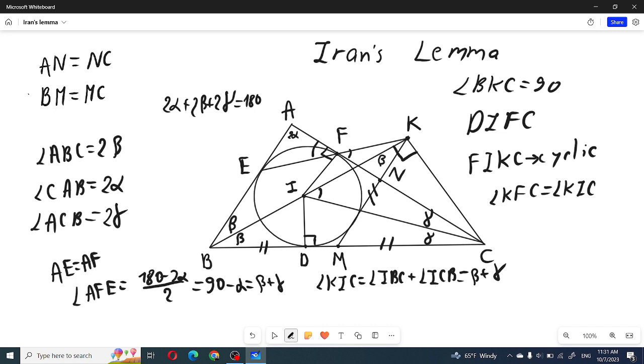And now what can we say about angle KMC? This must be 2β because this equals angle MKB plus angle KBM.